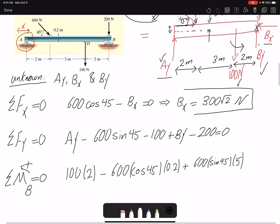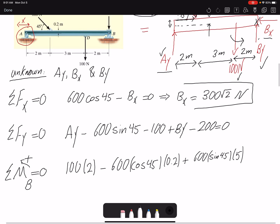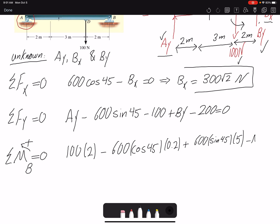And then last but not least is Ay, which is creating a clockwise moment, so that would be negative: -Ay times 7 equals 0.